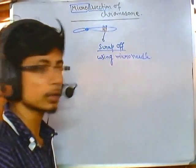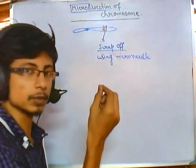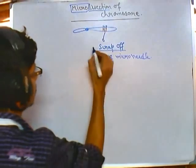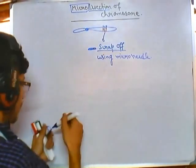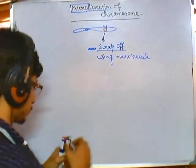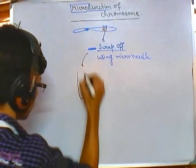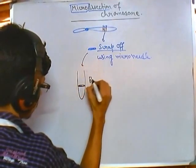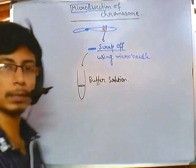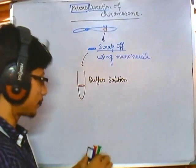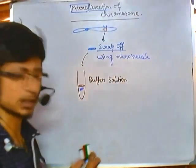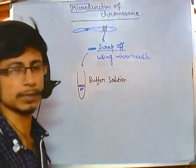We use micro needles or microscopic needles to scrap off a particular section of the chromosome. We take that scraped section and place it in a buffer solution. After placing it into the buffer solution, we can do many things with it. This process is simply called micro dissection — just taking a sample segment of the chromosome.